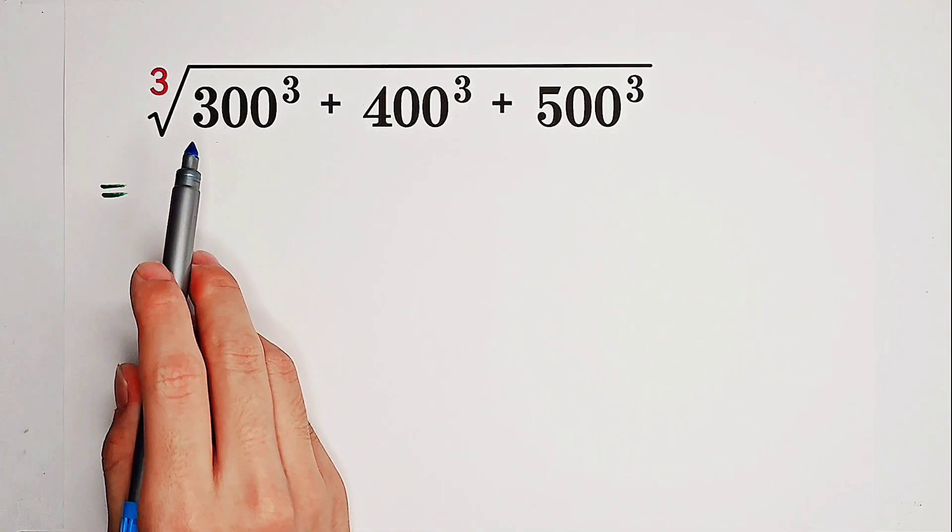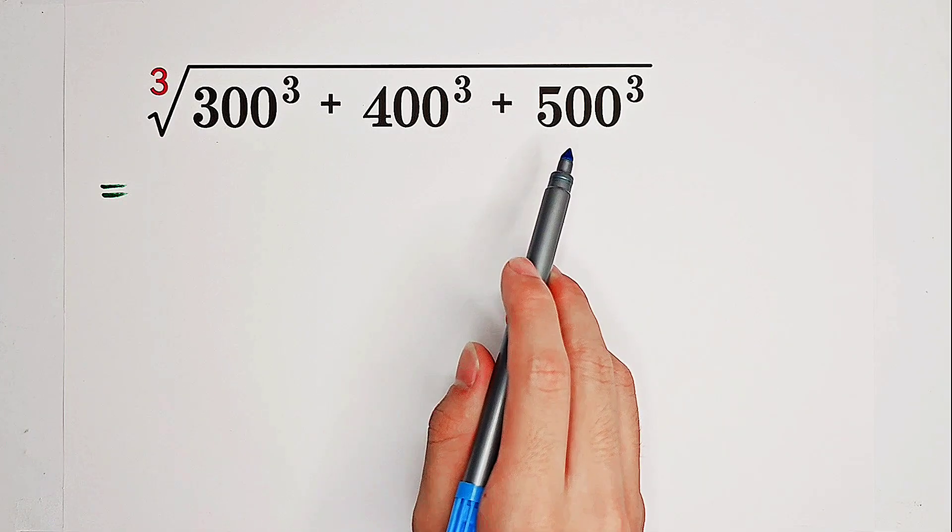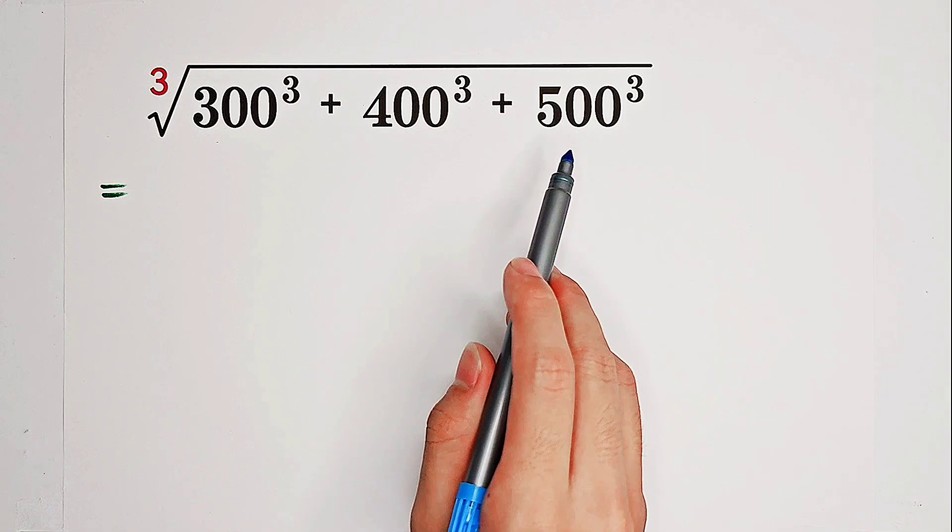Notice that 300, 400, and 500 have a common divisor, and that is 100.